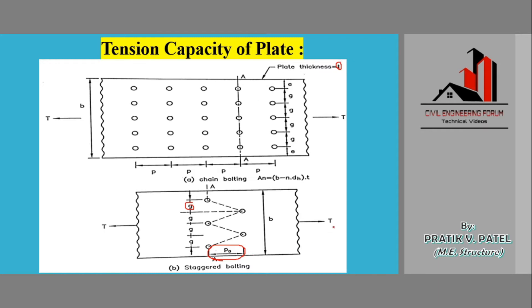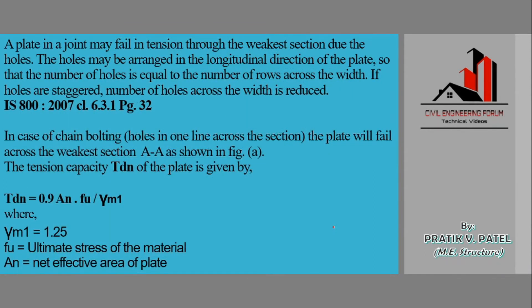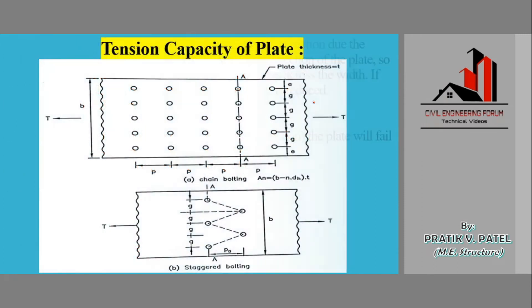Theoretically, a plate in the joint may fail in tension through the weakest section due to the holes. The holes may be arranged in the longitudinal direction of the plate so that the number of holes is equal to the number of rows across the width. If the holes are staggered, the number of holes across the width is reduced.